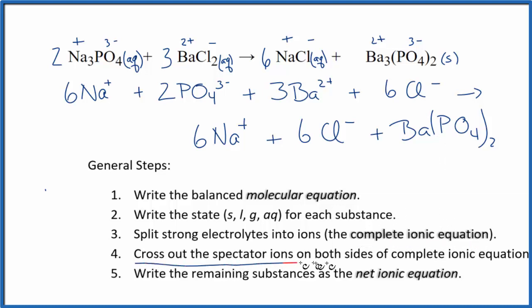And now we can cross out spectator ions. They're on both sides of the equation. So I can see the reactants up here, I have 6 sodium ions. I also have that in the products. I can cross that out. Here I have 6 chloride ions. Products, 6 chloride ions. Cross it out. But everything else is unique. So we have our net ionic equation.